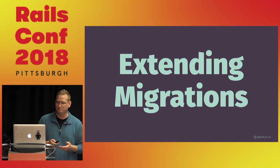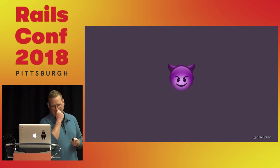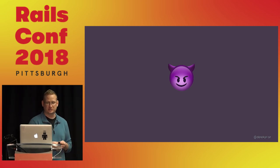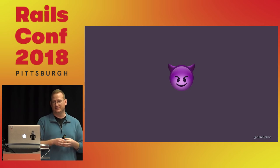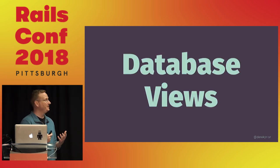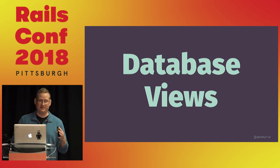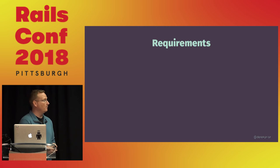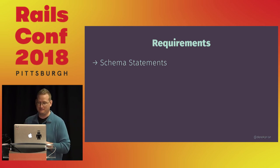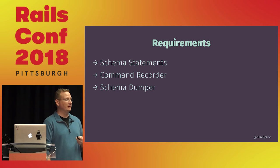So what if we tried to provide some of those missing behaviors in the most Rails-like manner possible? Gems that do this have existed for a long time — Foreigner allowed foreign keys on Rails applications long before it was merged into Rails, and Schema Plus still exists as a collection of extensions. Together with my friend Caleb Thompson, we set out to add support for database views in the most Rails-y way possible, and we did that by developing a thing we call Scenic. Because we wanted to be Rails-y, we knew we'd need schema statements to call in our migrations, a command recorder for down-for-free, and we'd need to enhance the schema dumper so we could keep using schema.rb.